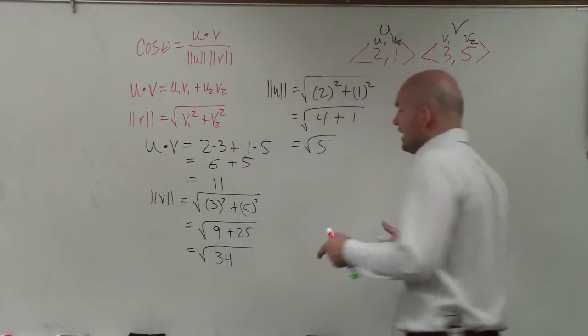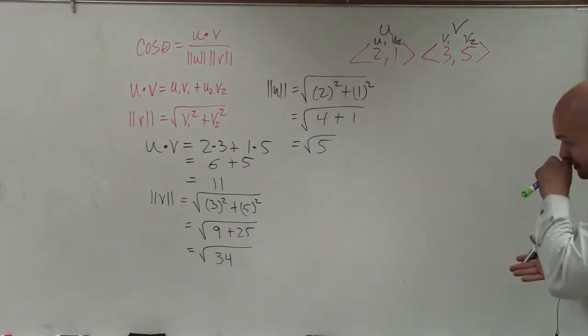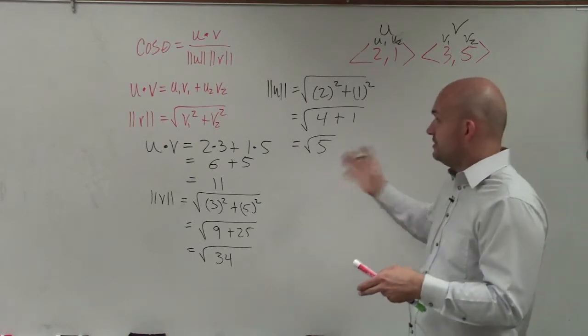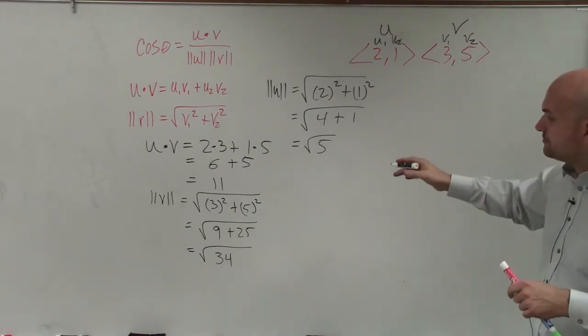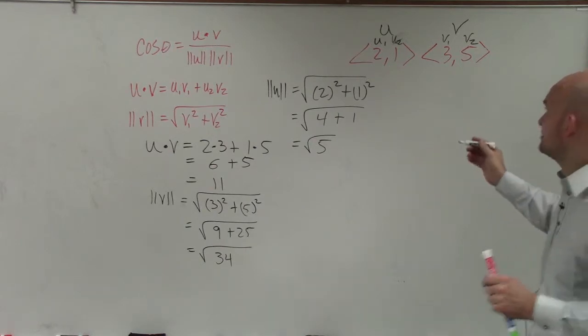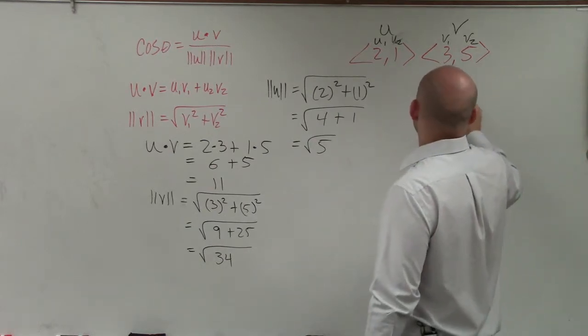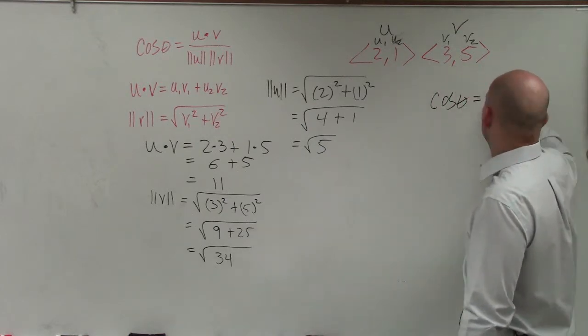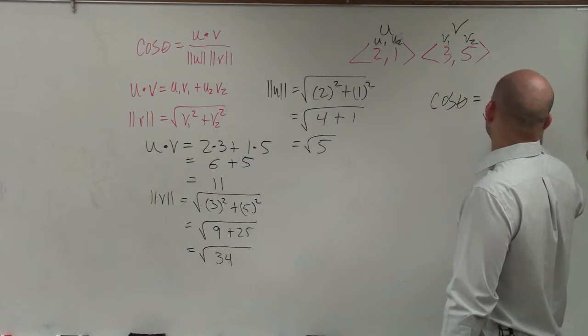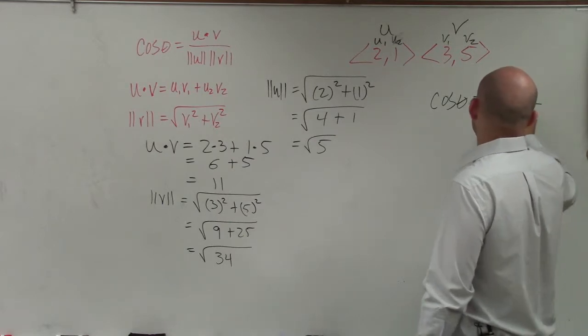So now I have, I know what the dot product is, which is 11, and I know what my two magnitudes are. So I'm going to say cosine of theta is equal to 11 divided by the square root of 34 times the square root of 5.